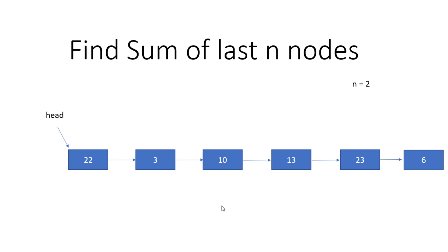Our aim is to find the last N nodes. So if N is 2, it means I want to find out the sum of these 2 nodes because these are the last 2 nodes. If N is 1, it means I want to find the sum of this 1 node. And if N is 6, it means I want to find out the sum of last 6 nodes. So this is again a valid case.